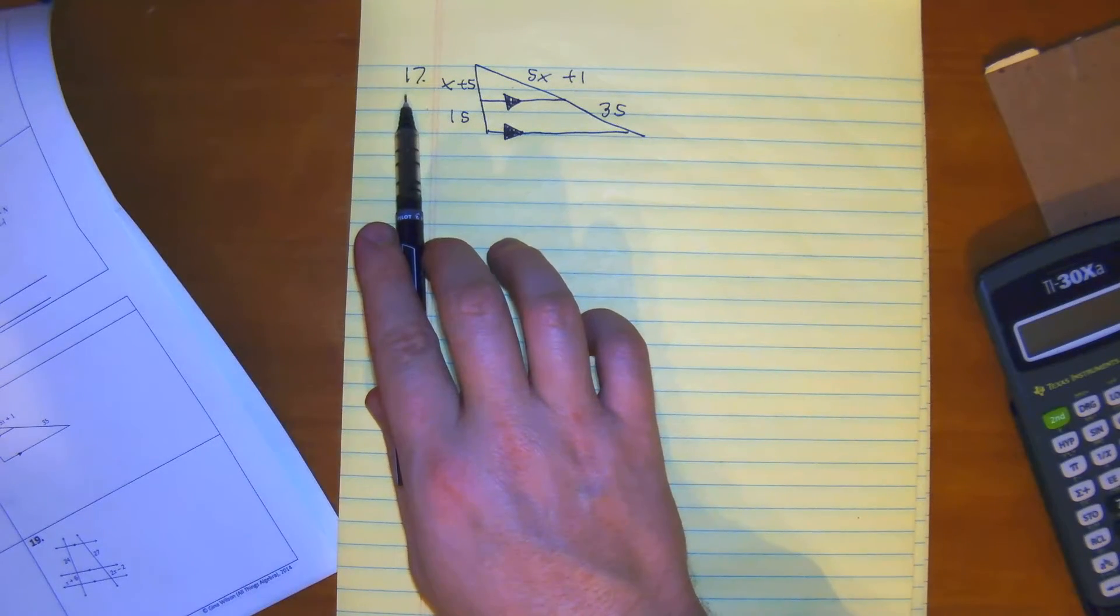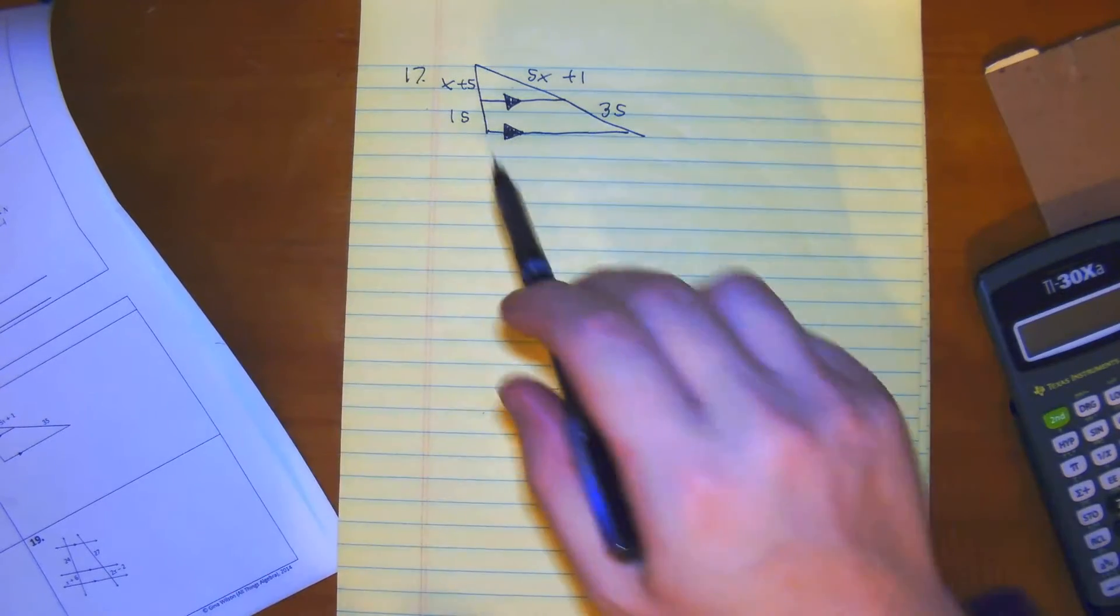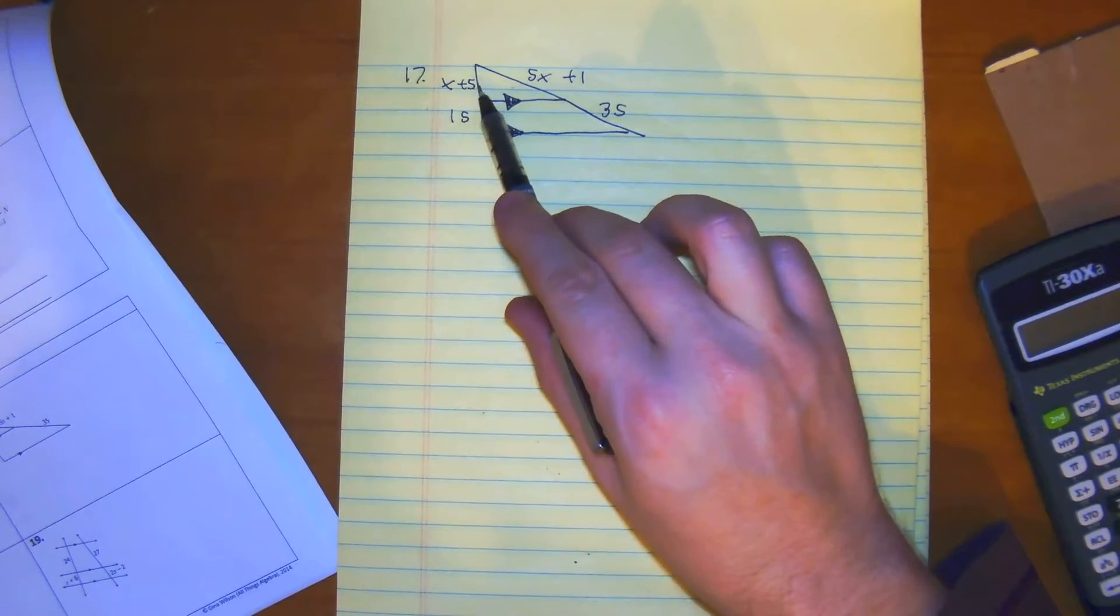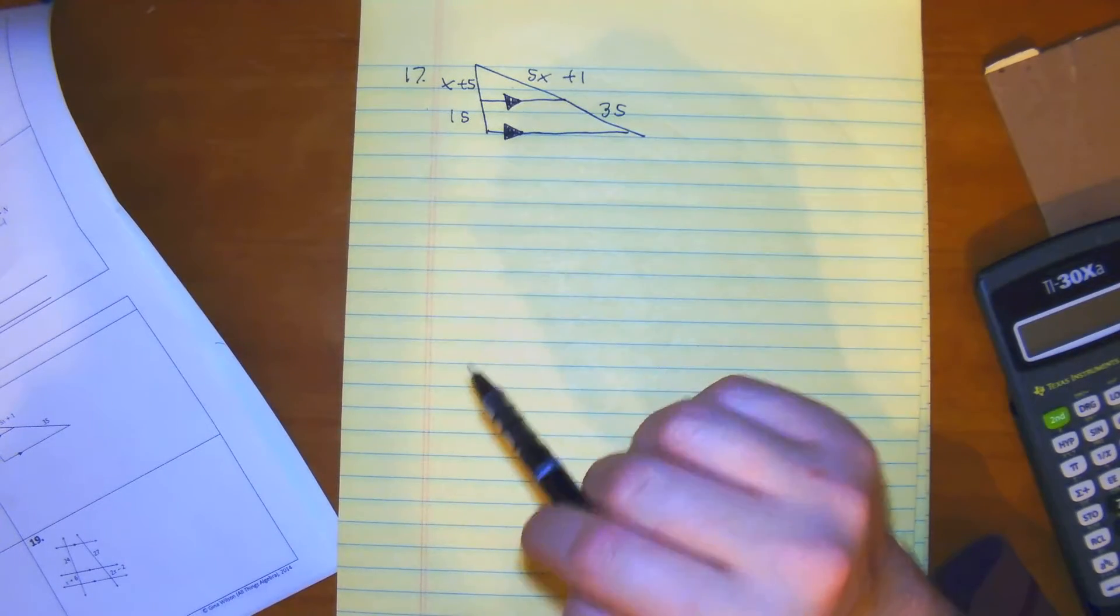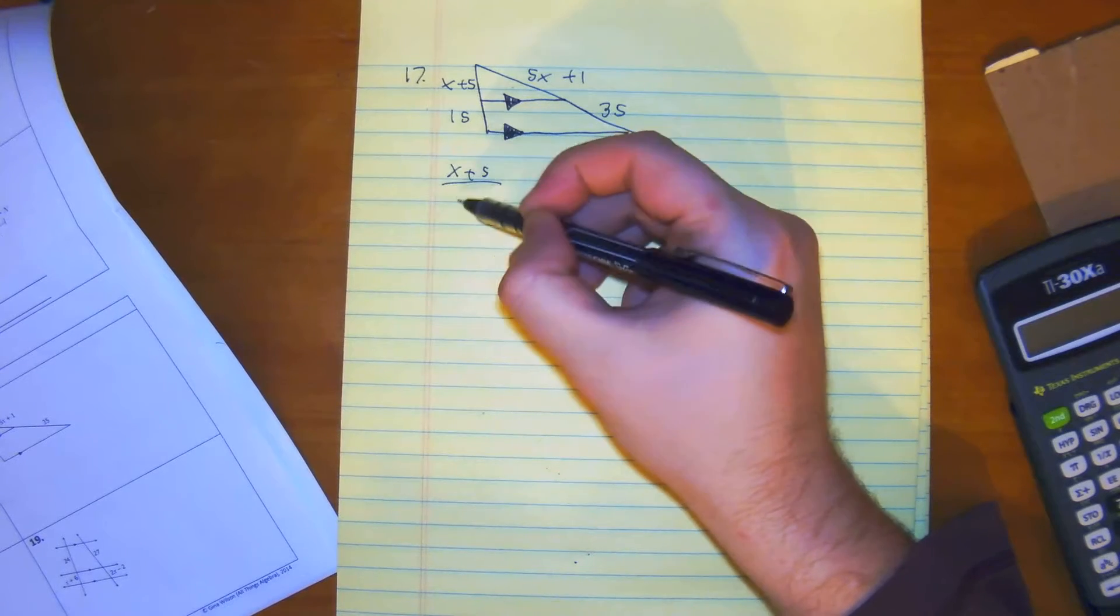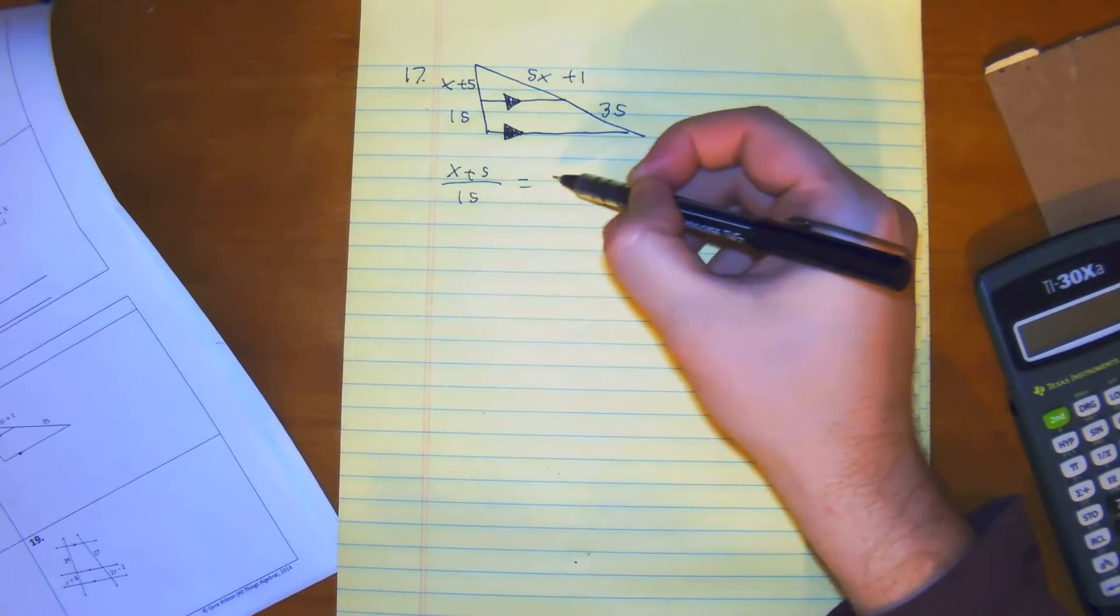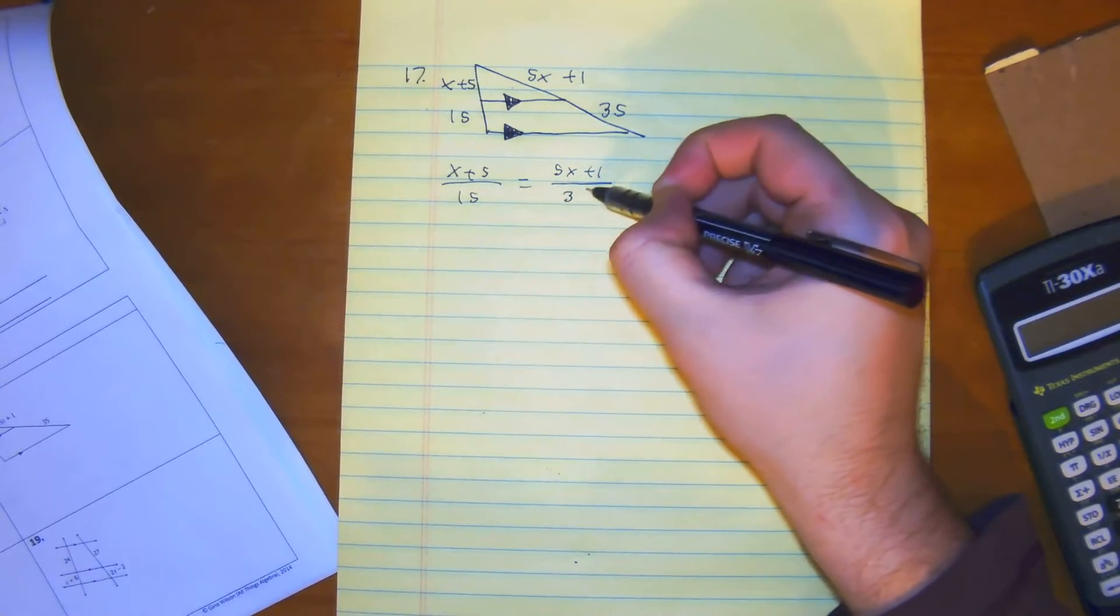Number 17, we're going to be using our proportionality theorem. So what that means is that we're going to compare x plus 5 to 15, and then 5x plus 1 to 35. So we have x plus 5 over 15 is equal to 5x plus 1 all over 35.